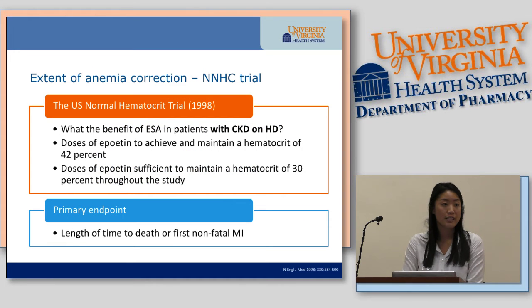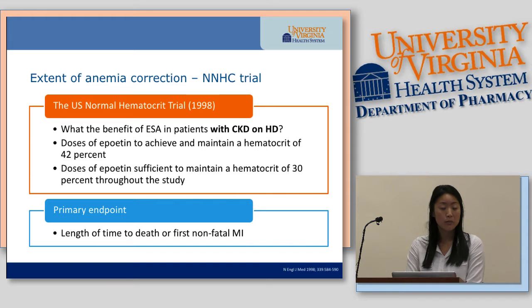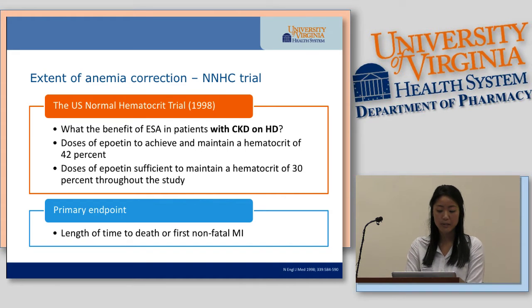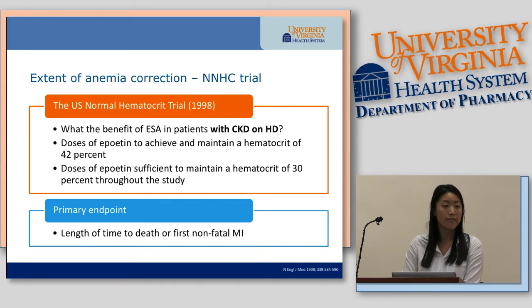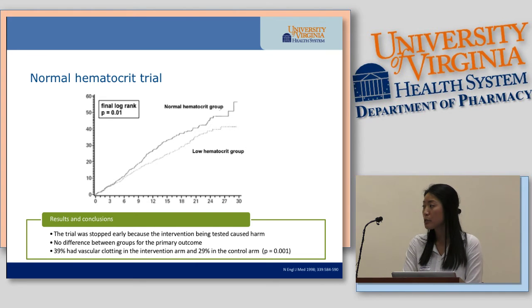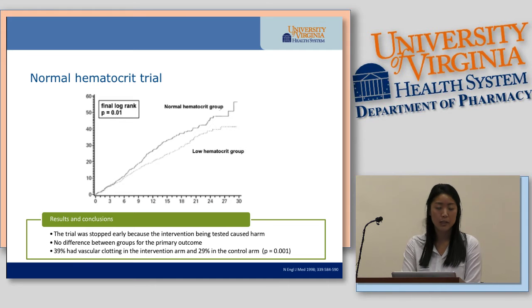One of the first landmark trials looking at optimal hematocrit levels in this population was the U.S. Normal Hematocrit Trial. They looked at the benefit of ESA in CKD patients on hemodialysis. The first group received epoetin to achieve and maintain a hematocrit of 42%; the other group received epoetin sufficient to maintain a hematocrit of 30%. The primary endpoint was time to death or first nonfatal MI. The trial was stopped early because the intervention caused harm — there was no difference in the primary outcome, but 39% of patients in the higher hematocrit group had vascular clotting versus 29% in the control arm.